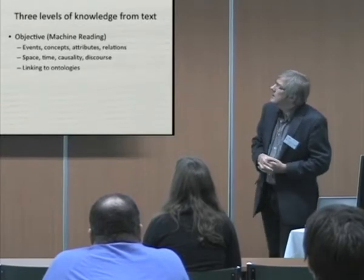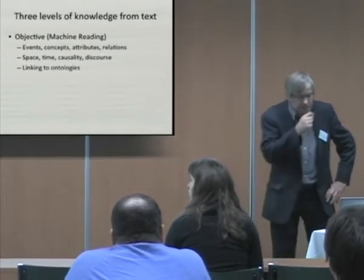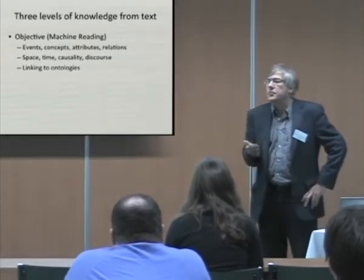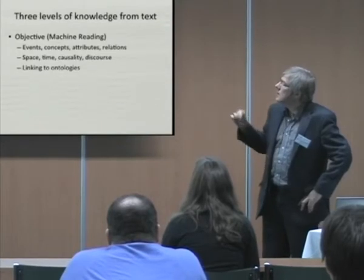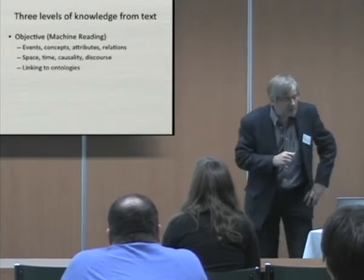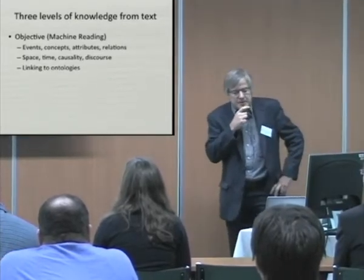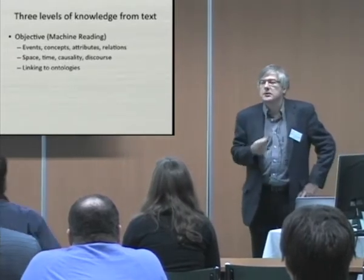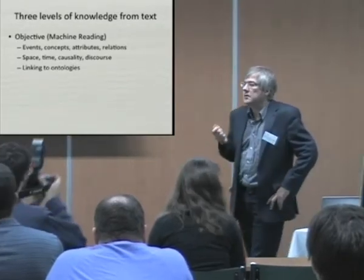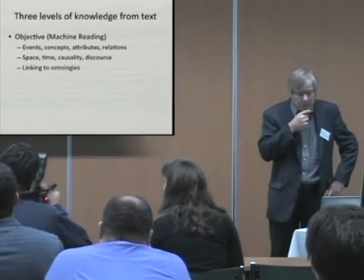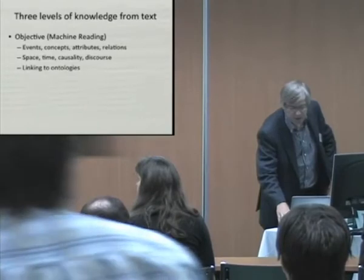You could say that there are three different levels of knowledge extraction from text that people are working on right now. One goes under the heading of machine reading these days. It's a deep understanding of text as far as it's factual. So we want to find events, concepts, attributes and relations between concepts. We want to be able to reason about space and time and causality, discourse aspects, and link to world knowledge in ontologies or databases like Wikipedia. That's the core computational linguistics work these days.